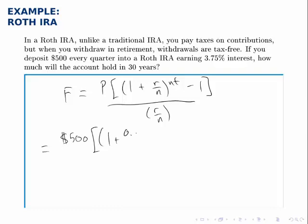R, in this case, is 3.75%, so 0.0375. N is 4, because we're depositing it every quarter, or four times a year.